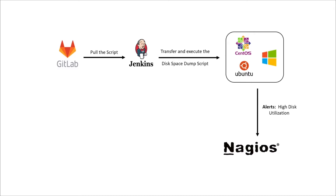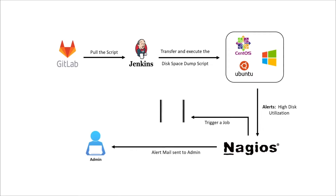After a few minutes, a high disk usage alert message is shown under the alert page on Nagios for all three nodes. One alert mail is sent to the admin user, and another alert message is sent to trigger the job in Rundeck. In the next stage, the Rundeck job will execute the script to resolve the high disk usage for all three nodes.